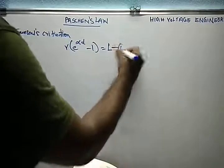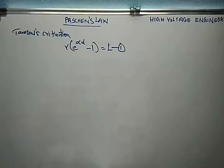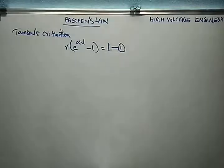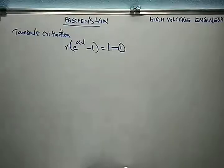This equation — Townsend's criterion — enables the evaluation of breakdown voltage of the gap by use of appropriate values of alpha. However, in Townsend's breakdown it does not directly discuss pressure, and how pressure and distance are incorporated.